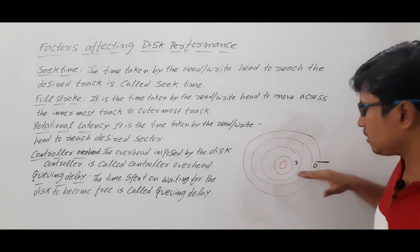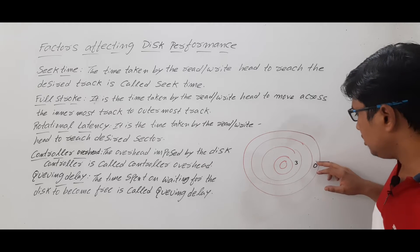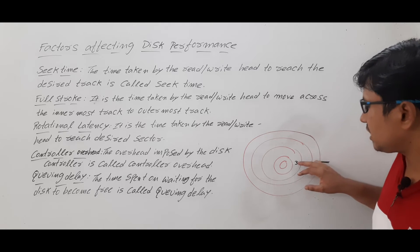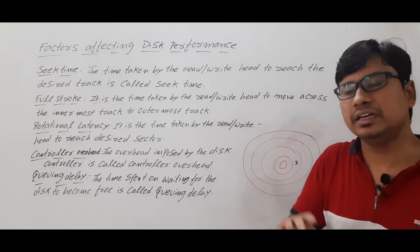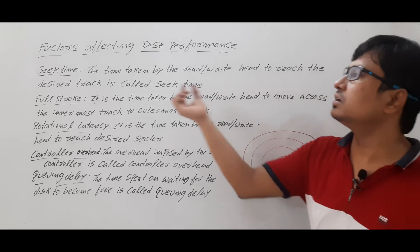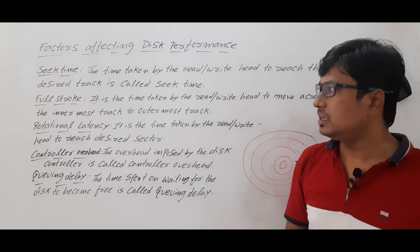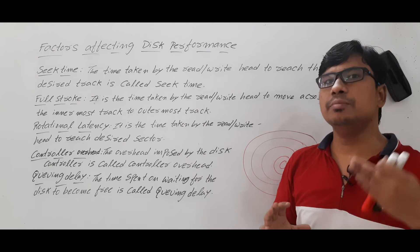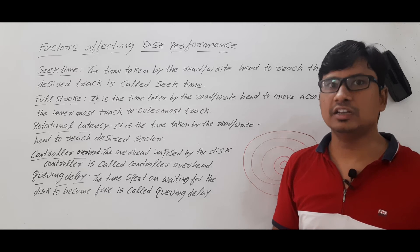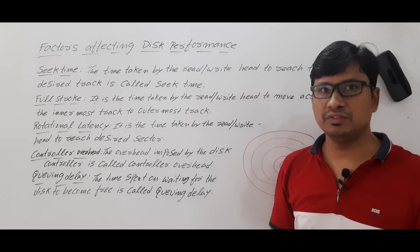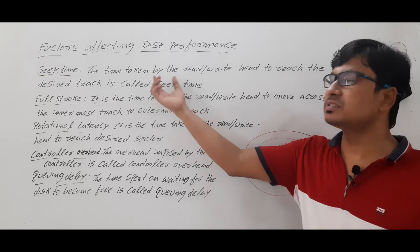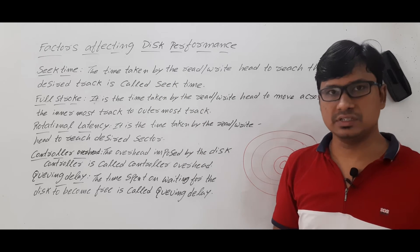The read-write header can go in the forward direction or backward direction. The seek time is the time taken by the read-write header to move from track zero to track three — that is, to reach the desired track from the current track. Seek time plays a major role in disk performance, which is why we have various disk scheduling algorithms such as First Come First Serve, Shortest Seek Time First, SCAN, C-SCAN, LOOK, and C-LOOK — their objective is to minimize the seek time to serve requests.